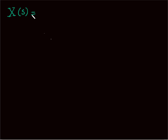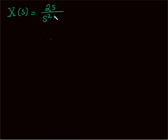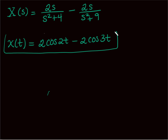So the Laplace of my solution is 2s over (s squared plus 4) minus 2s over (s squared plus 9). Taking the inverse Laplace transform of each term, I get x of t equals 2 cosine of 2t minus 2 cosine of 3t. That's the complete particular solution to the initial value problem.